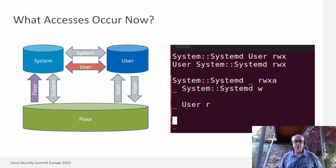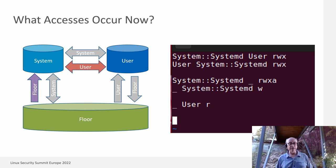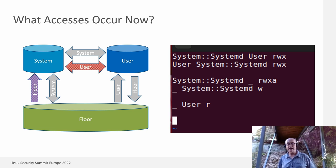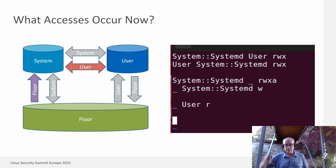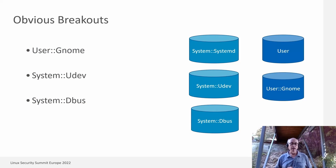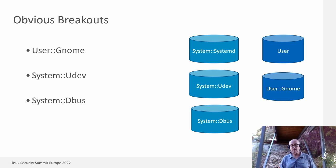After making those configuration changes and doing a first pass, we find we've solved the user-writing-to-floor problem. However, we still have the problem that system and user have mutual write access. We haven't addressed that yet, so we go look at the logs again.